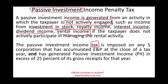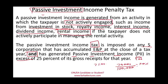The passive investment income tax is imposed on an S-Corporation that has earnings and profit at the close of the tax year, and you generated passive investment income — we'll abbreviate this as PII — in excess of 25% of gross receipts. For example, if your gross receipts are $100,000 and you have $25,000 in passive investment, you're at 25%. Once you exceed 25%, this tax will be imposed.